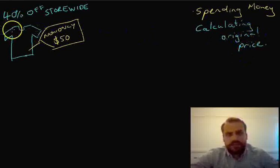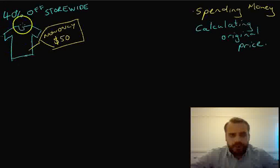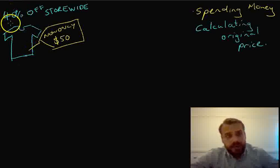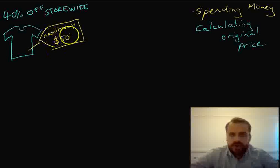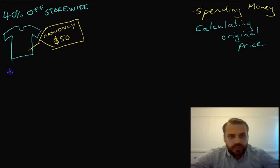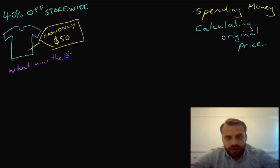So take this one as an example. This time we're buying shirts, just for something a little bit different. You can see that there's a 40% off storewide sale and this shirt is now only $50. So they haven't shown us what its original price was, but that's what we want to know. What was the shirt originally?